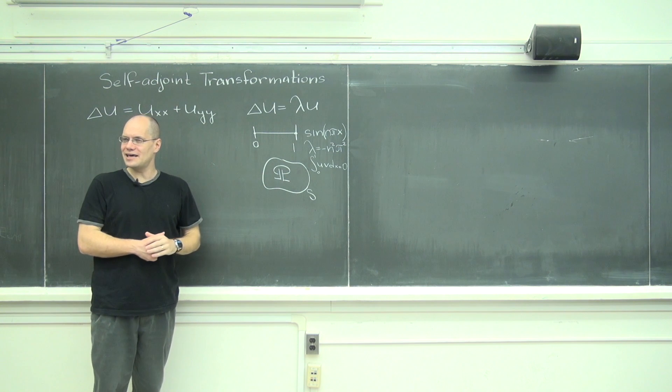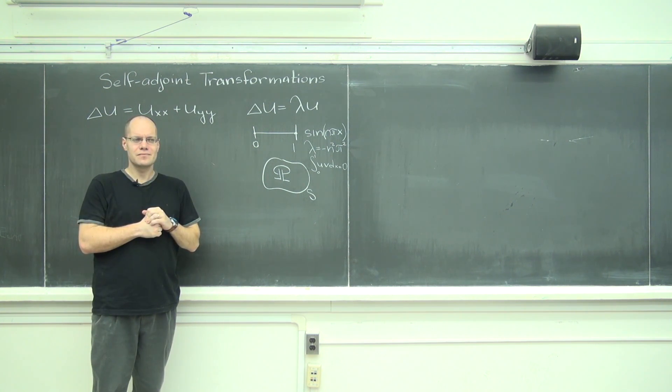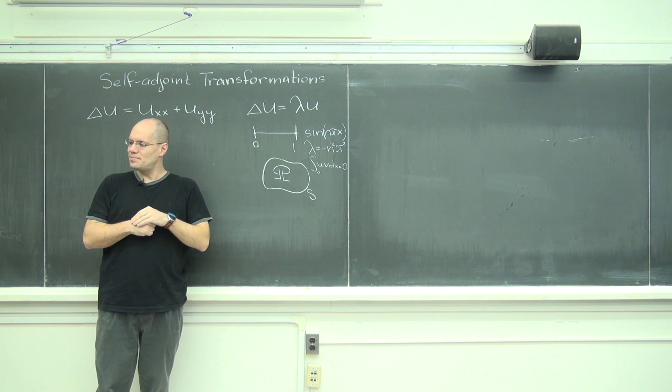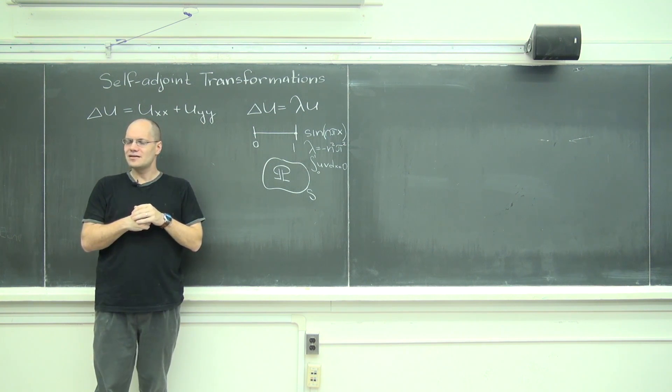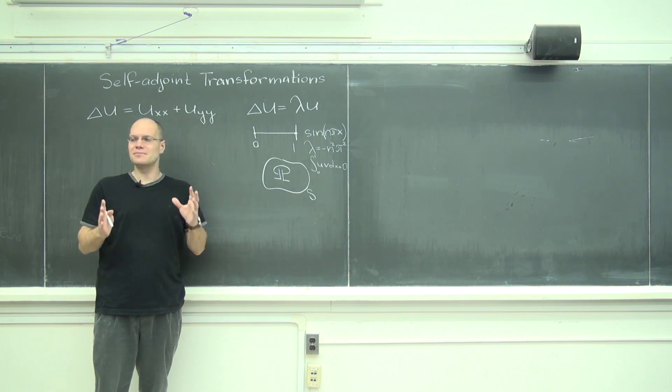The same thing will be the case here. And so you want to be able to say that the Laplacian is a negative definite symmetric operator. But what in the world does it mean for an operator to be symmetric?